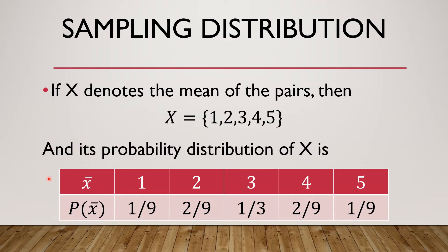And its probability distribution will be: for mean 1, probability is 1/9; for 2, 2/9; for 3, 1/3 (which is 3/9 expressed in simplest form); for 4, 2/9; and for 5, 1/9.